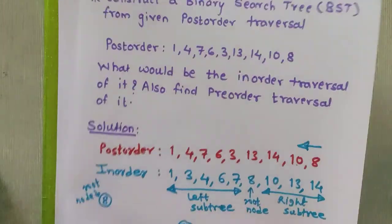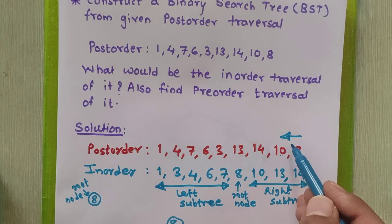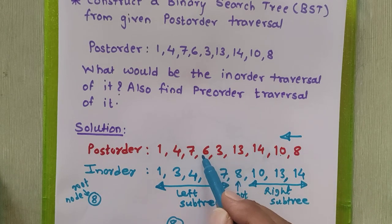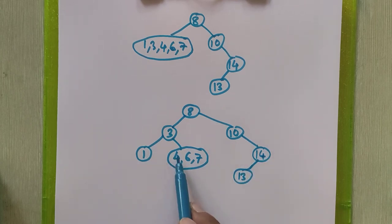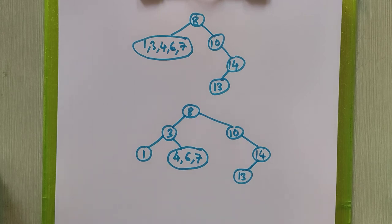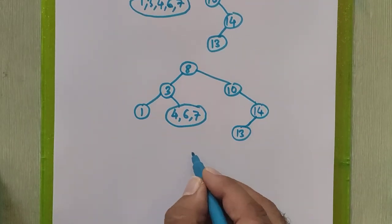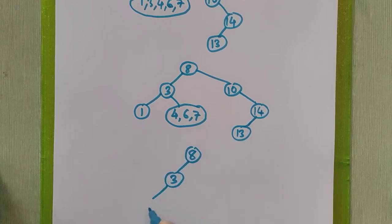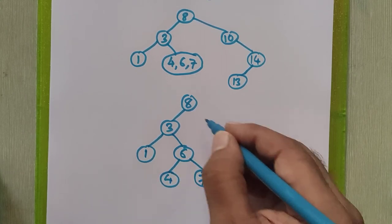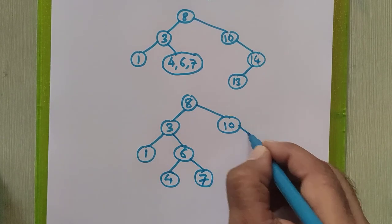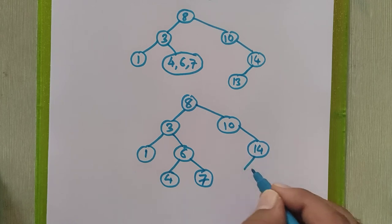After placing node 3, we refer the post order sequence again. After node 3, the next root is 6. Checking the diagram, 4 appears on the left hand side of 6 and 7 appears on the right side. So 4 will go to the left sub tree of node 6, and 7 will go to the right sub tree. We have successfully placed node 6.